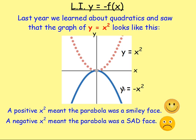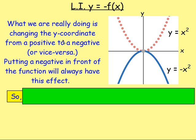Really what we're doing here is the negative in front of the x squared is flipping the graph in the x axis, so it's reflecting it over there. And really we're changing the y coordinate from a positive to a negative. Because y equals whatever x squared is, but we're seeing here y is the negative of whatever x squared is. So putting a negative in front of the function will always have this effect.